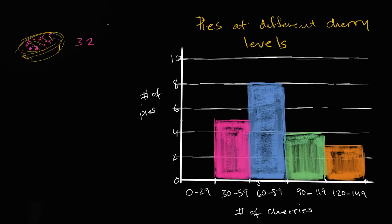How many pies have at least 60 and at most 89 cherries? How many pies have at least 90 and at most 119? And then how many pies have at least 120 and at most 149? And you know that you don't have any pies that have more than 149 cherries. So this should account for everything.